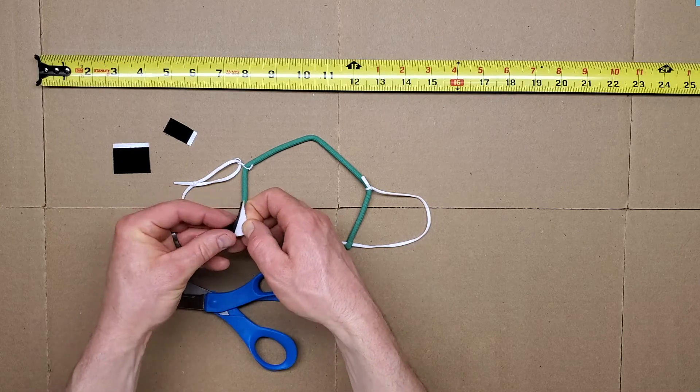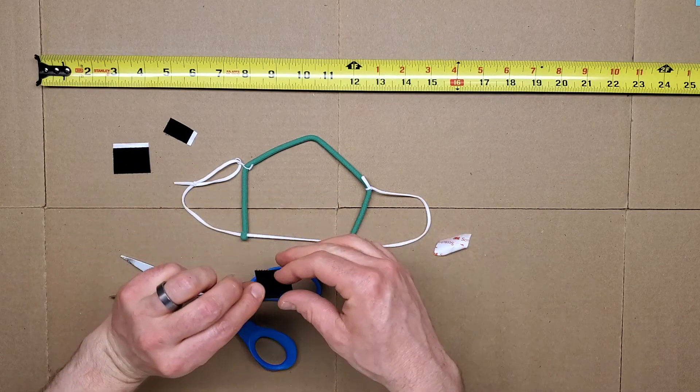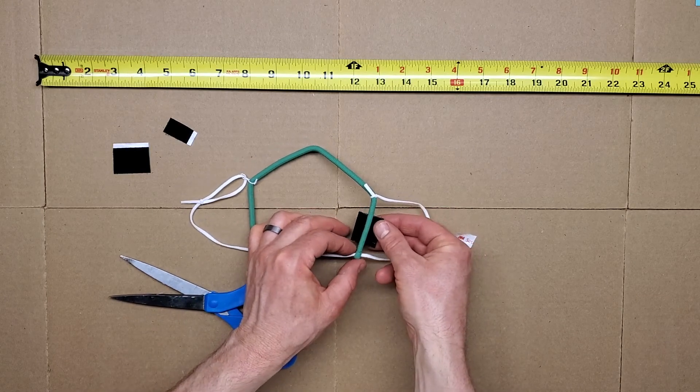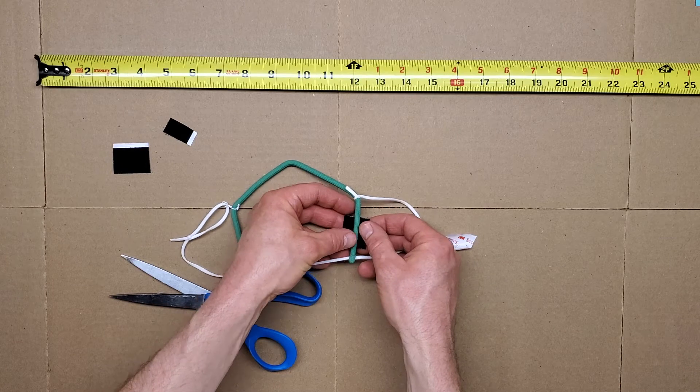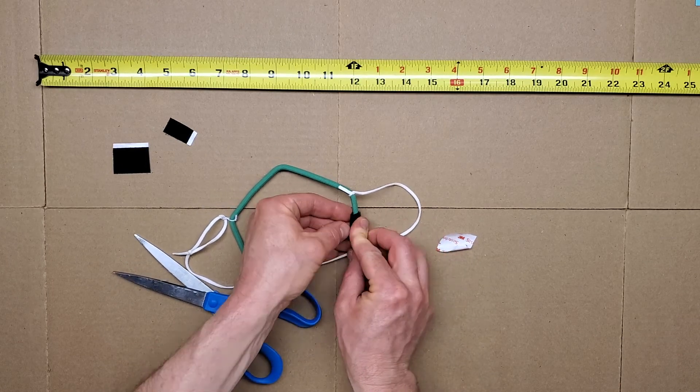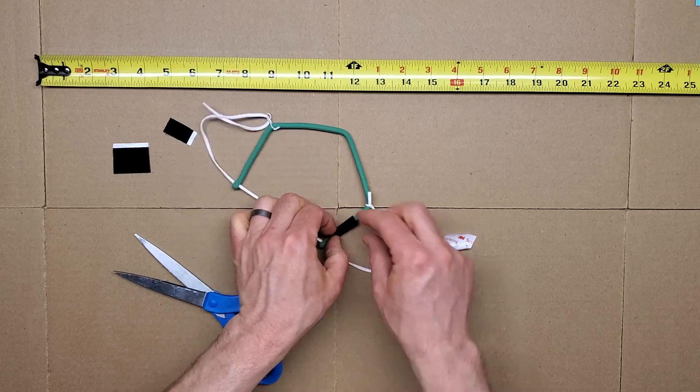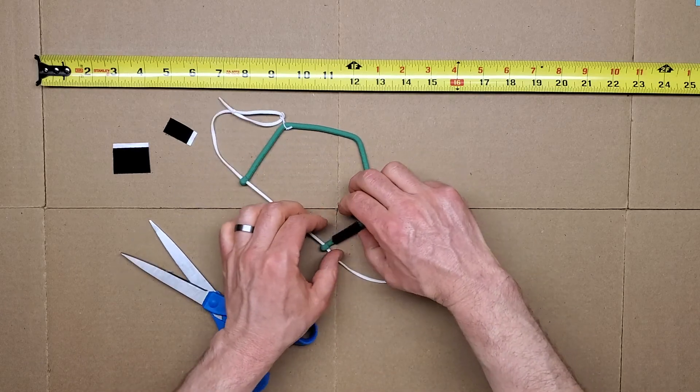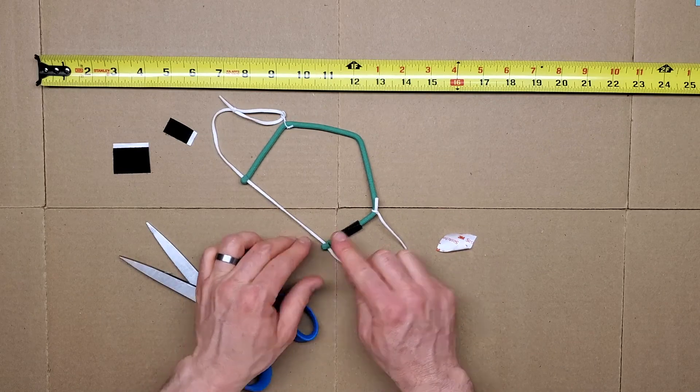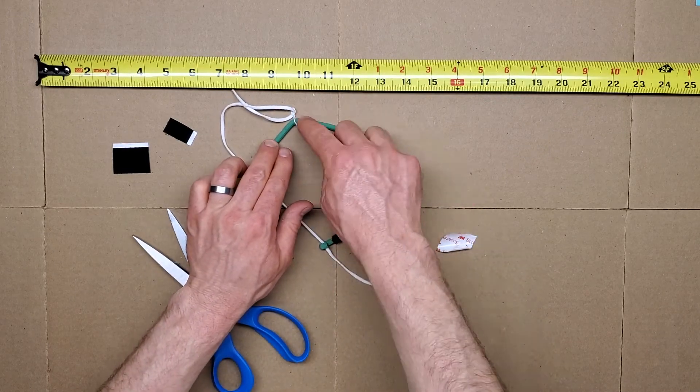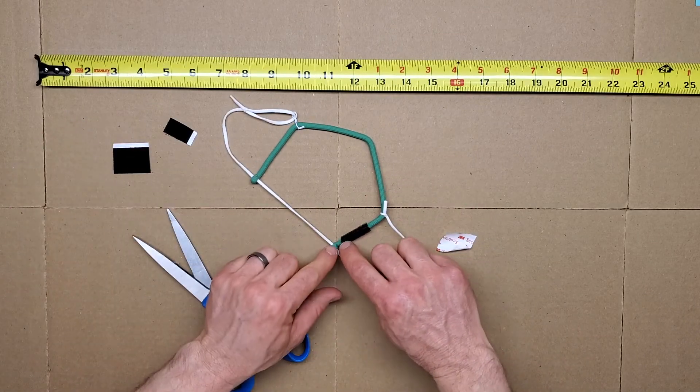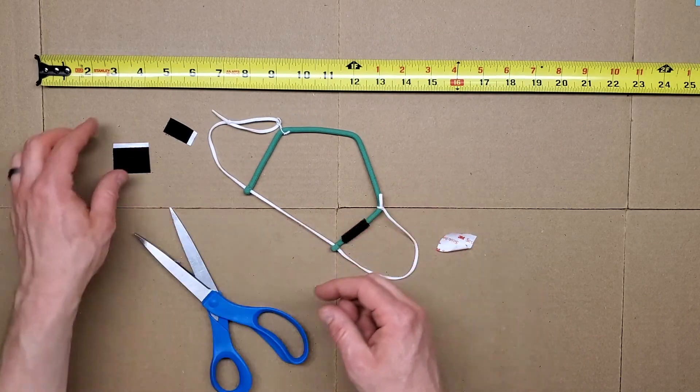Take off the adhesive. This is adhesive backed. We want to wrap it around the fitter near the end loop and stick it to itself. Right here in the front. This is the front of the fitter where the loops come out. This thing is in front. Now where the Velcro is stuck to itself comes out front.